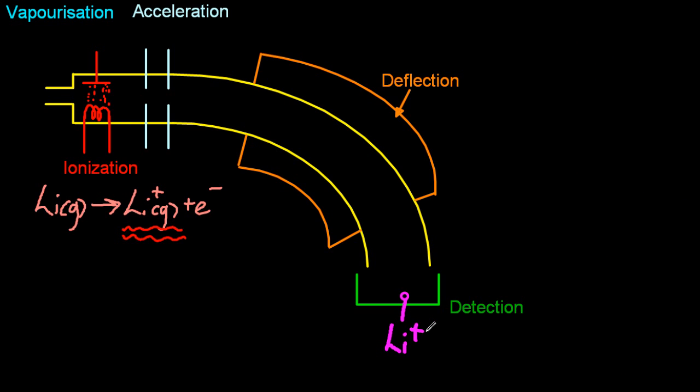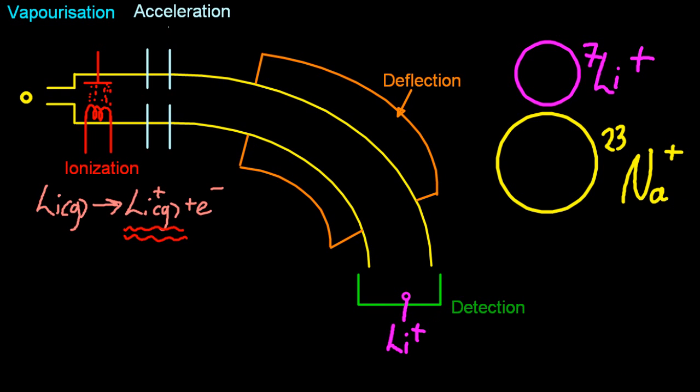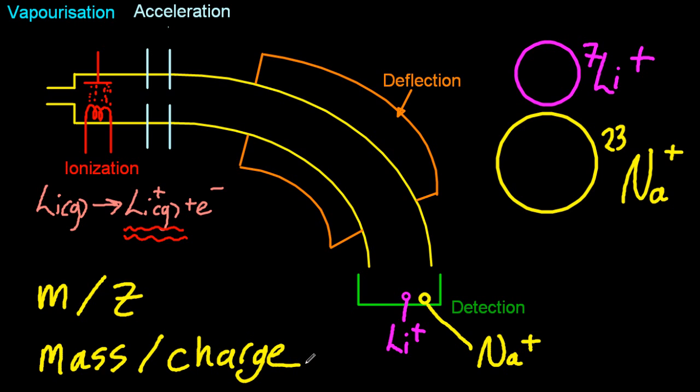But the mass spectrometer is more known for measuring the different masses. So let's compare the lithium plus to a sodium plus. Now sodium is a much heavier ion and so it's going to have more trouble changing direction, just like in that little animation before. The heavier one has more trouble changing direction, so it's going to adopt a more straight trajectory. It's still going to curve because it's got a charge. So what's important? Well, the mass is important and the charge is important. Both of those affect how much it curves around. And that's known as the M over Z.